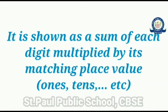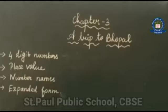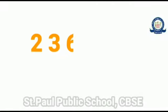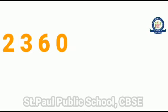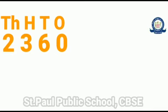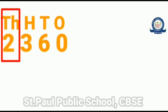The place values are ones, tens, hundreds, and thousands. Let us see how to expand a four-digit number. Here I have taken the number 2360. I have written the place values for all the digits — ones, tens, hundreds, and thousands.